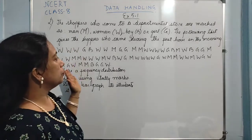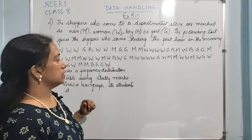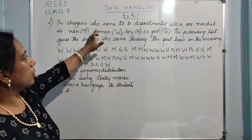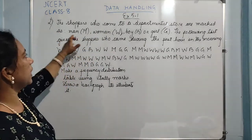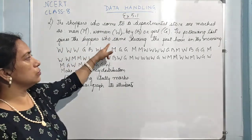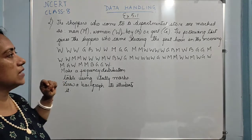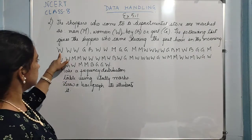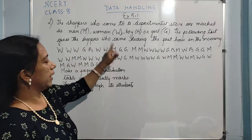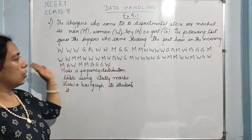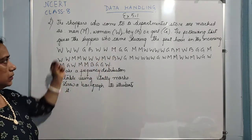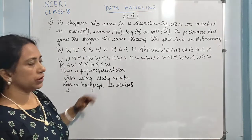Now how to prepare a frequency distribution table? Here they have given the question like this: the shoppers who come to a departmental store are marked as men, women, boy or girl. The following list gives the shoppers who came during the first hour in the morning. So W W means women, then girl, boy, women, man, like this. These are the total number of shoppers who came to that particular departmental store during the first hour.